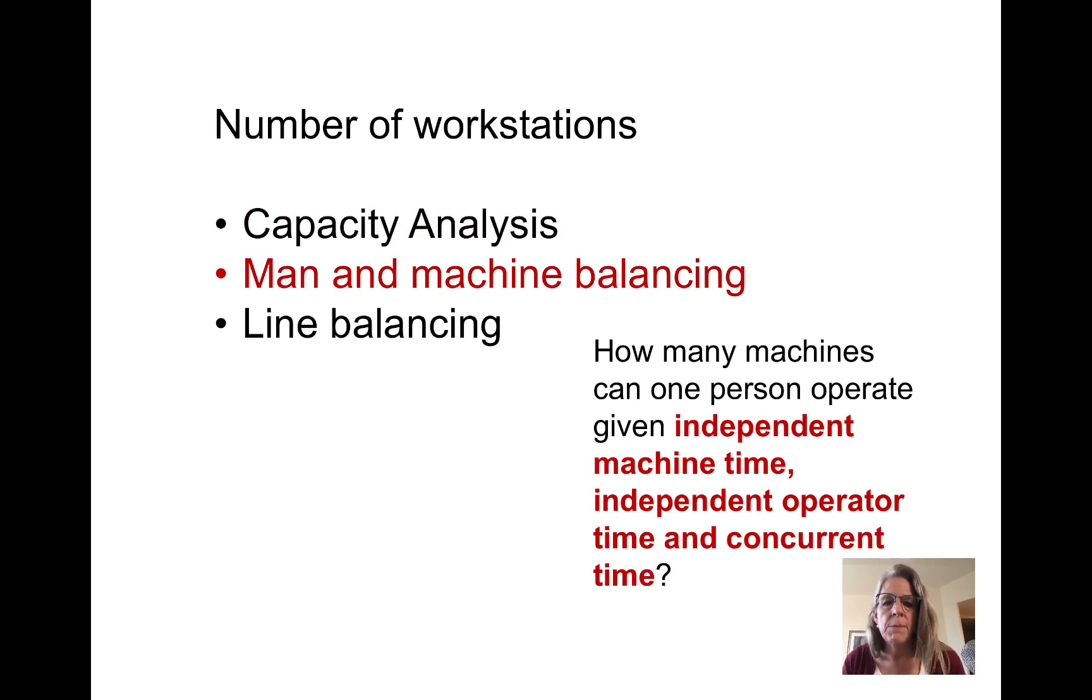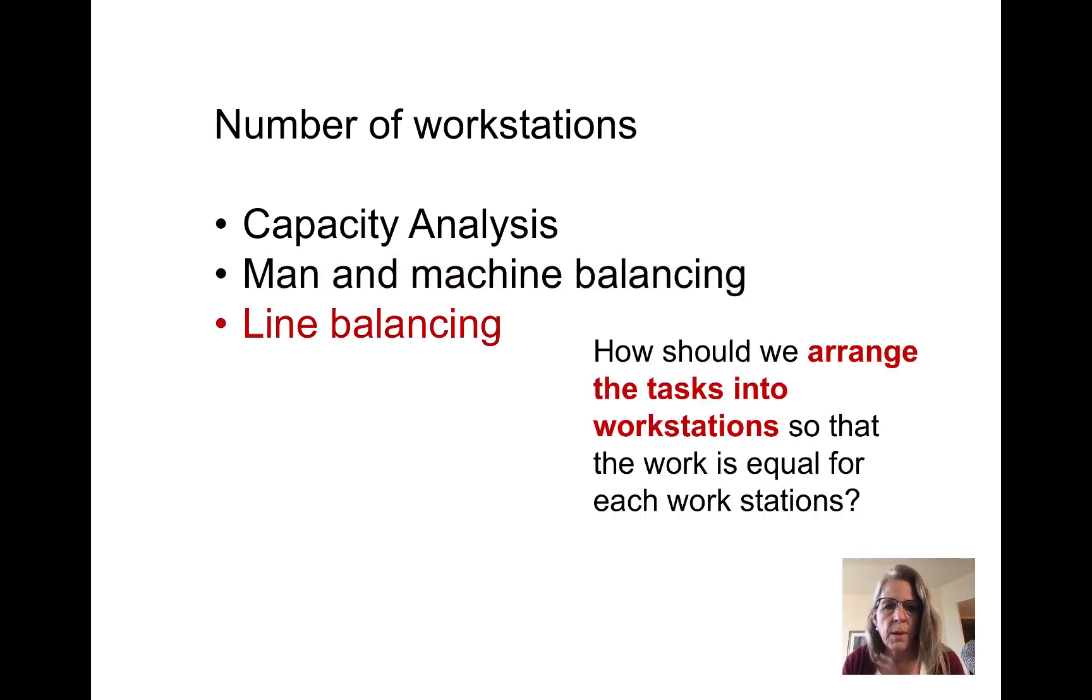When we're talking about man-machine balancing, we're asking how many machines can one person operate, given independent machine time, independent operator time, and concurrent operating time. In line balancing, we ask how should we arrange the tasks into workstations so that the work is equal for each workstation.